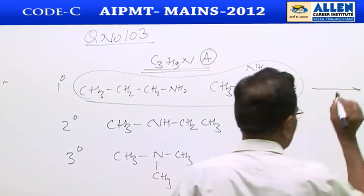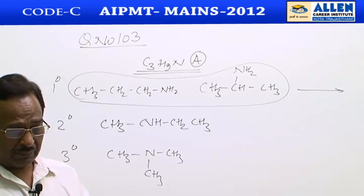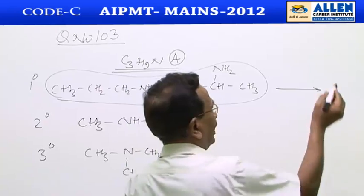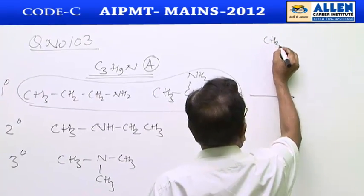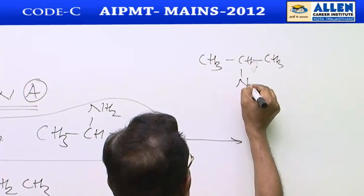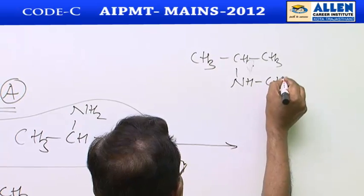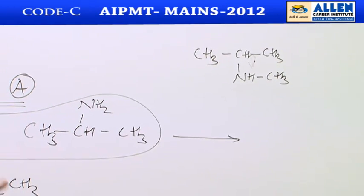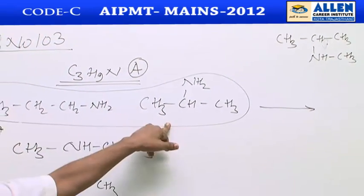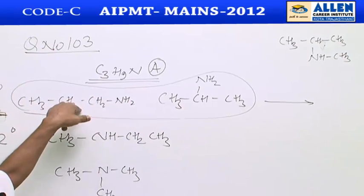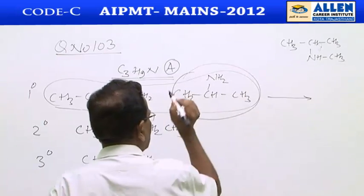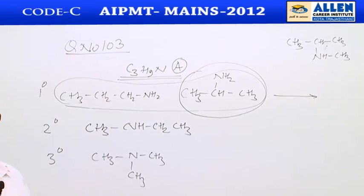But according to the question, the ultimate product is isopropylmethylamine, which is a secondary amine. There are two primary amines, so we consider only isopropylamine as the primary amine that leads to isopropylmethylamine.